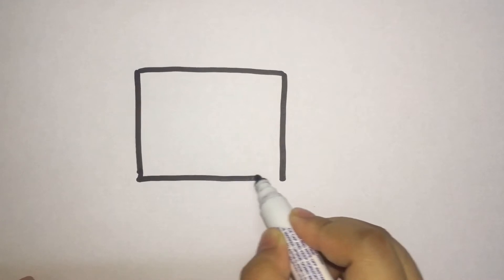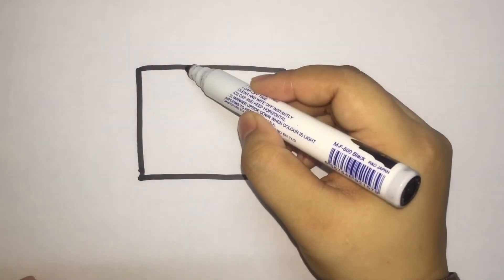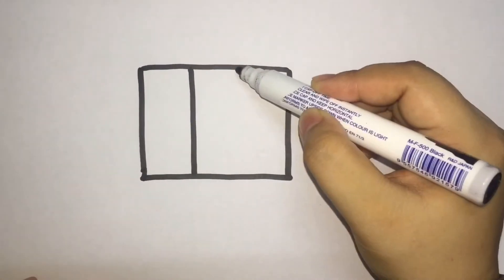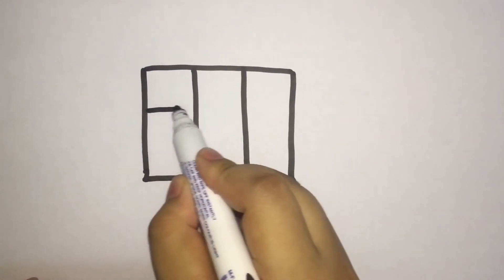It's unnecessary to be perfect, just a simple square. Okay, then we draw two vertical lines.